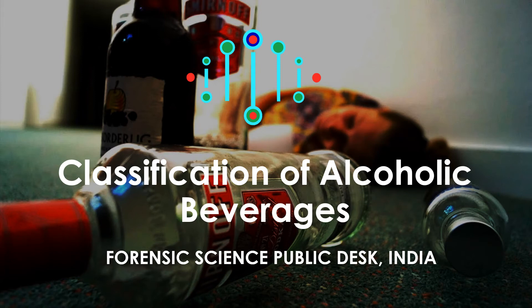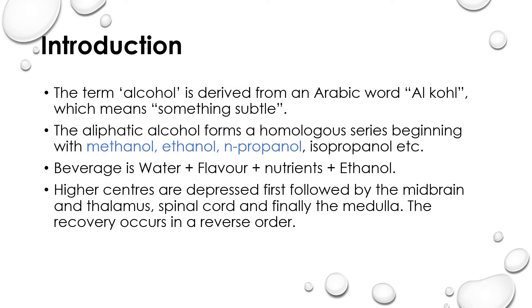Hello and welcome back to our channel Forensic Science Public Desk India. Here we are going to learn about classification of alcoholic beverages. The term alcohol is derived from an Arabic word 'alcohol' which means something subtle — that means the body senses are being sedated with alcohol. The aliphatic alcohol forms a homologous series beginning with methanol, ethanol, propanol, isopropanol, etc., in which the carbon chain is going on increasing.